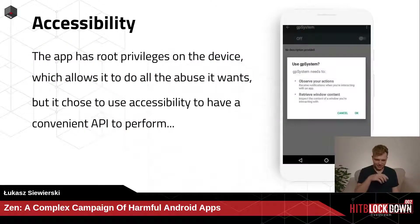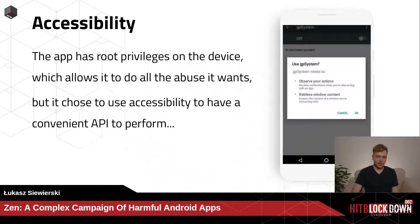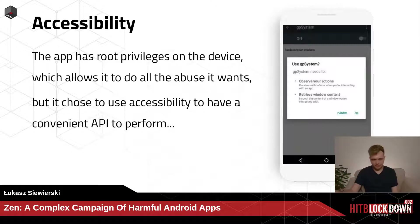If the user went through the regular process of enabling an accessibility service, they would see a prompt. This is actually the prompt from the app that requests accessibility after rooting — but the user won't see it because the app does it automatically. The service requests the privilege to observe user actions and retrieve window content, so it can read the screen and observe actions.